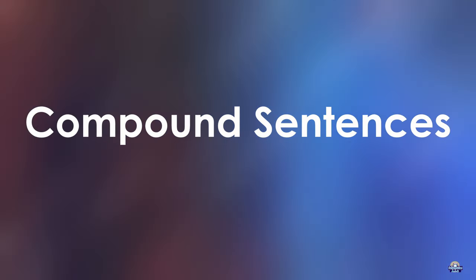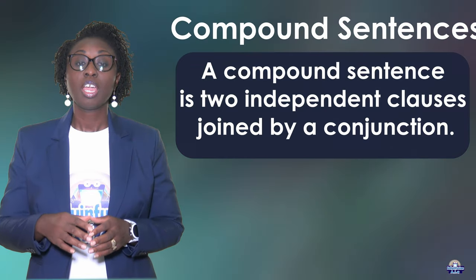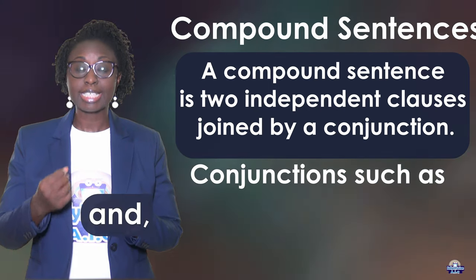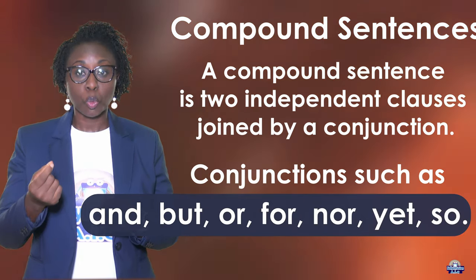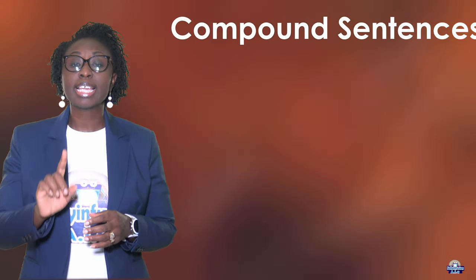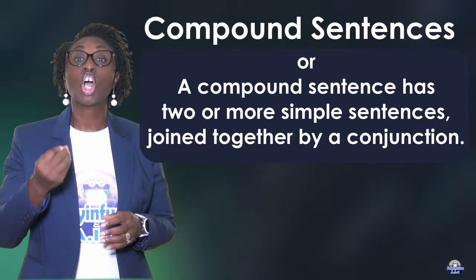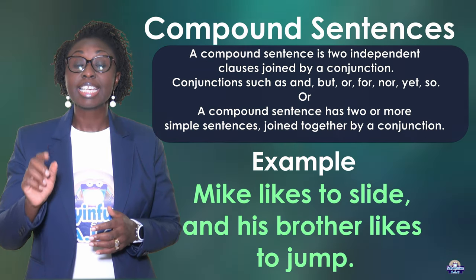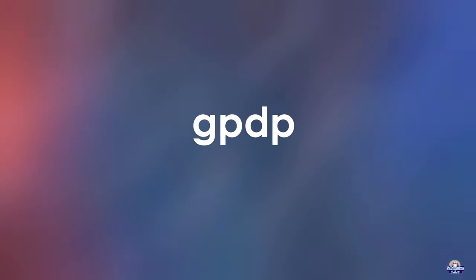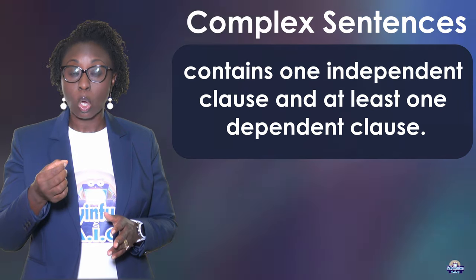A compound sentence is two independent clauses joined by a conjunction. Conjunctions such as and, but, or, for, nor, yet, and so. A compound sentence has two or more simple sentences joined together by a conjunction. For example: Mike likes to slide and his brother likes to jump.